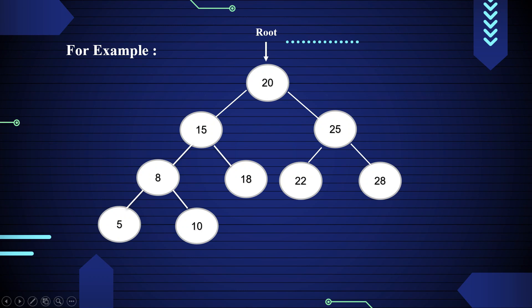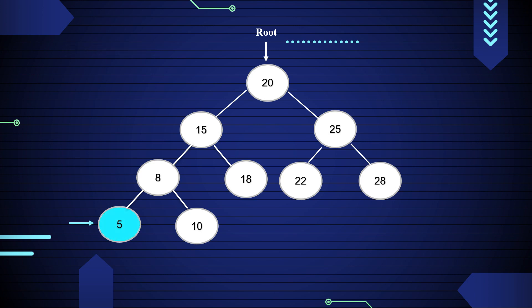Now let's see an example of in-order traversal. Here 20 is a root node. We move to the left subtree of 20, that is 15, and it also has a subtree 8, so we again move to the left subtree of 8, that is 5. Here 5 has no subtree, so print 5 and move towards its parent node 8. Now print 8 and move to the right subtree of 8.